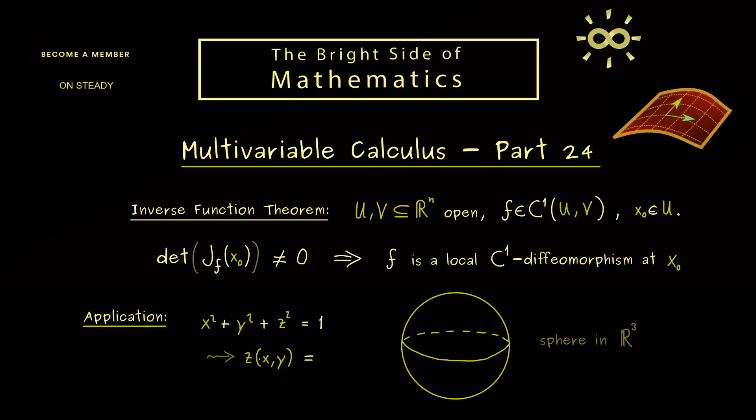In other words, can we reformulate this equation on the left hand side? Namely, we want to do it in such a way that we have a function z of x and y. So this would give us an explicit formula for our variable z. However, this might only work locally.